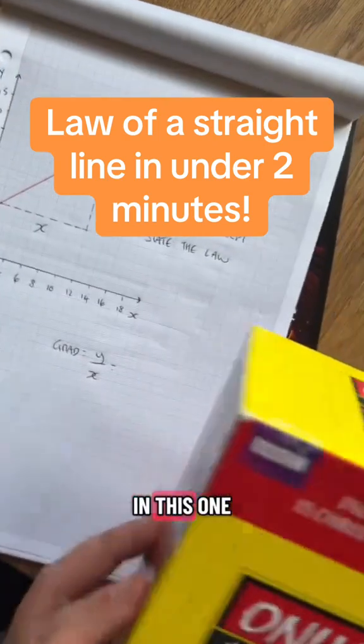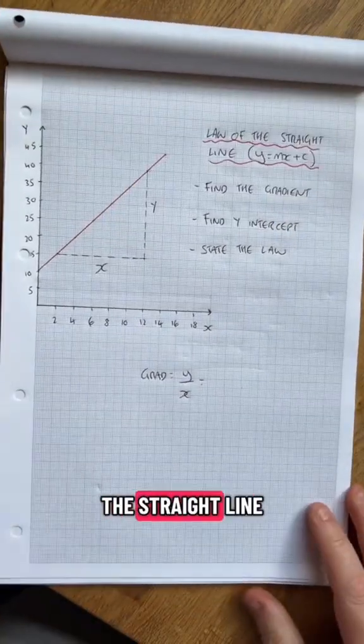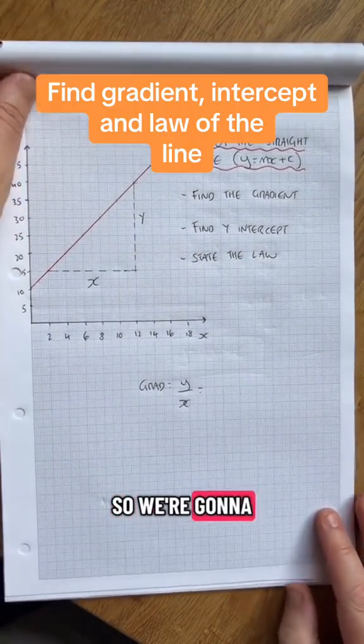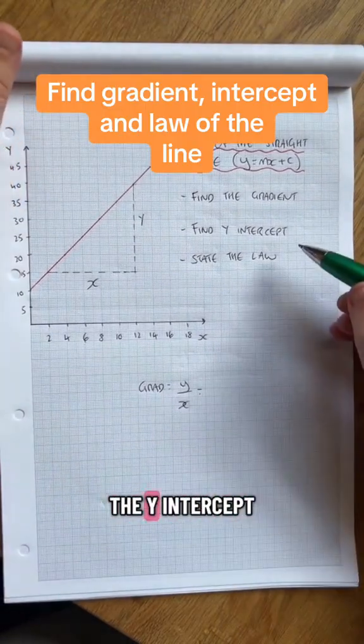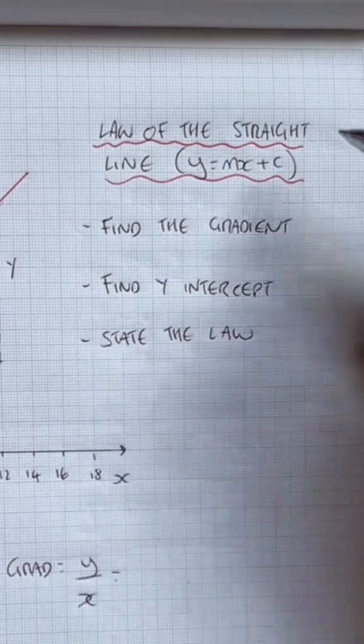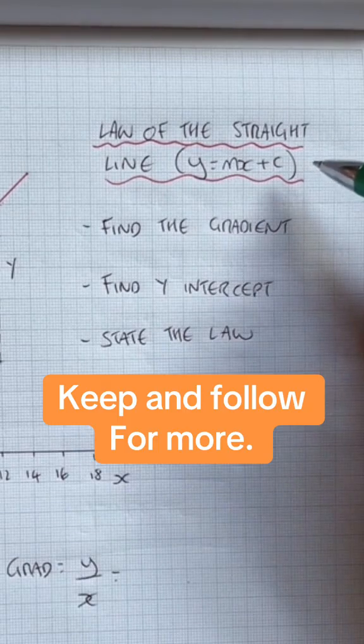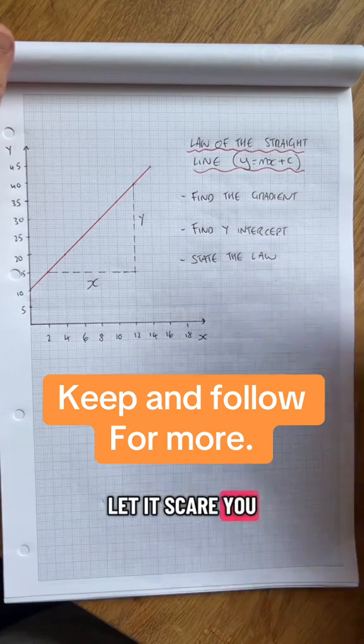Straight line graphs. In this one, we want to do the law of the straight line. So we're going to find the gradient, we're going to find the y-intercept, and state the law. There's the law, look: y equals mx plus c. Don't let it scare you.